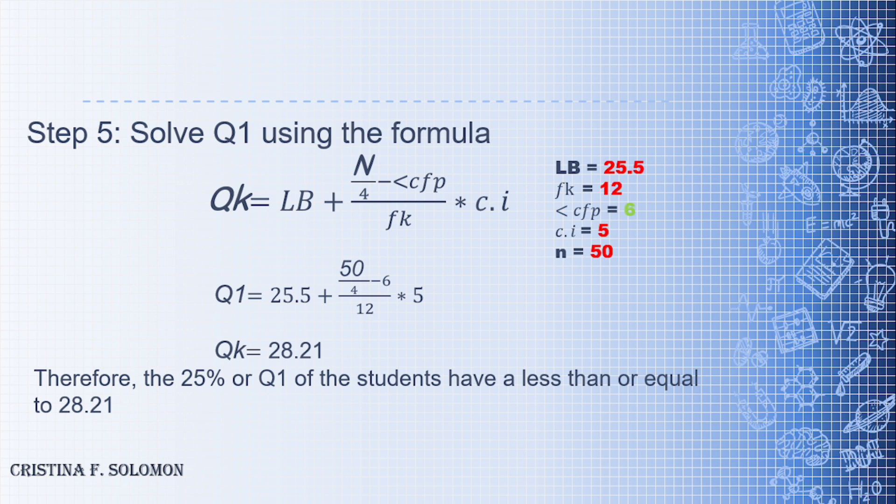Therefore, the 25% or the Q1 — the first quartile — means that 25% of the students have a score less than or equal to 28.21. If we divide the distribution into 4 equal parts, Q1 is 25%, Q2 is 50%, and Q3 is 75%.